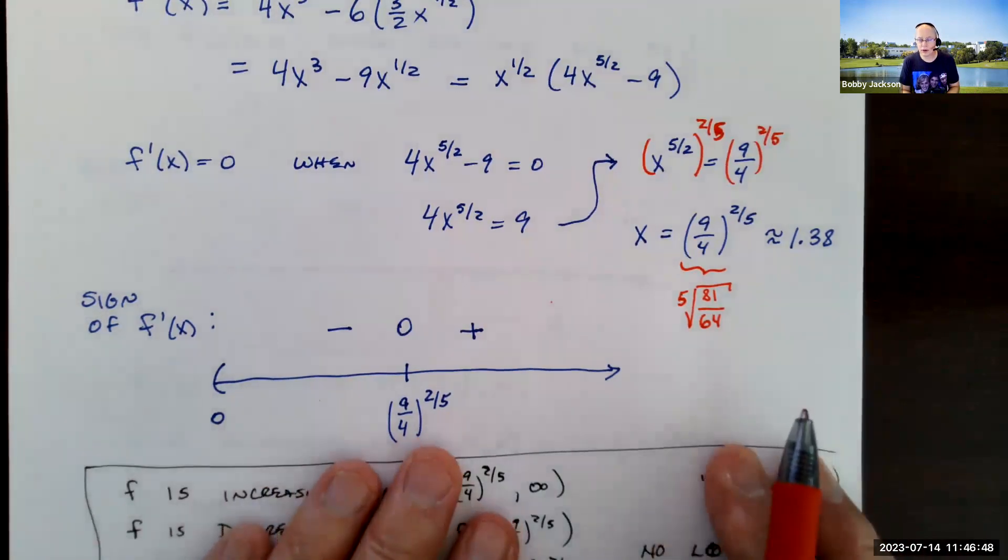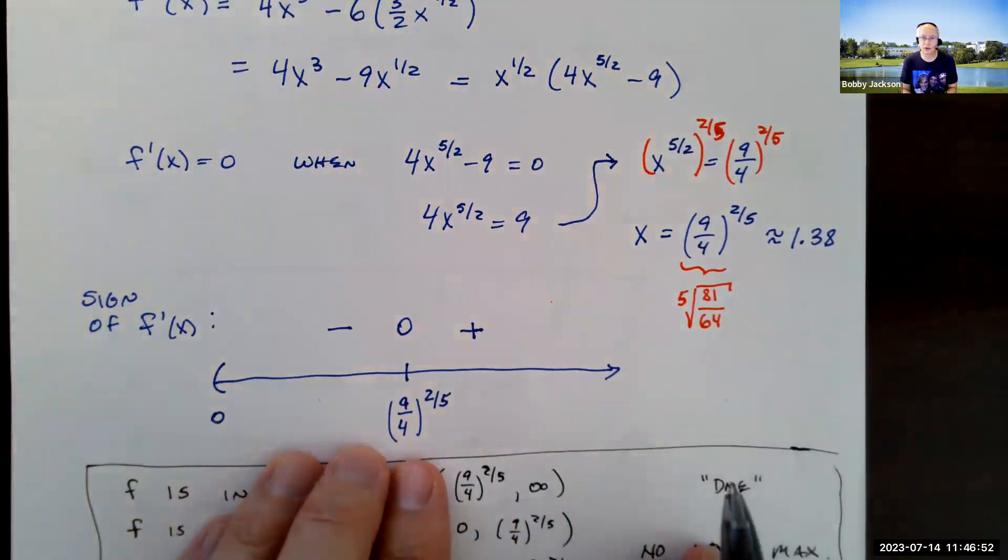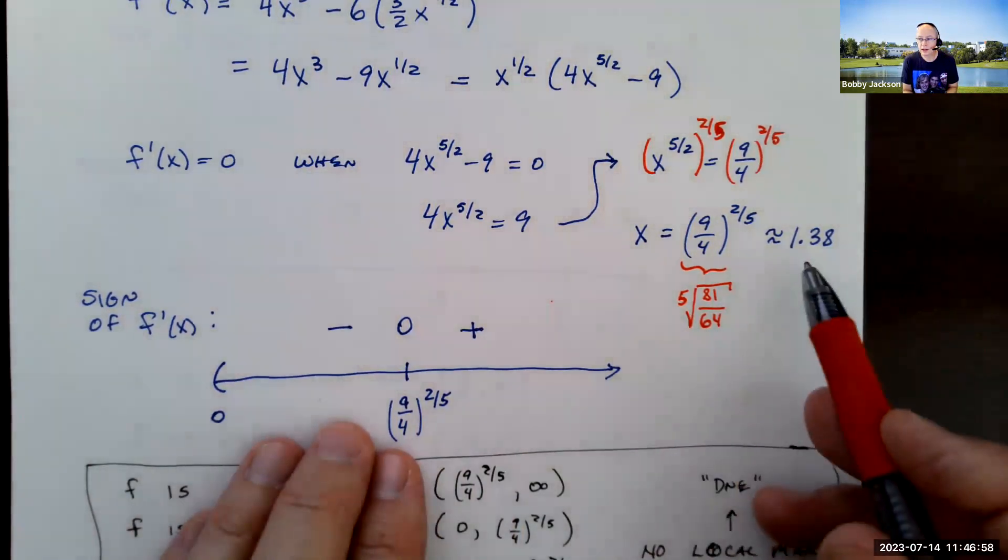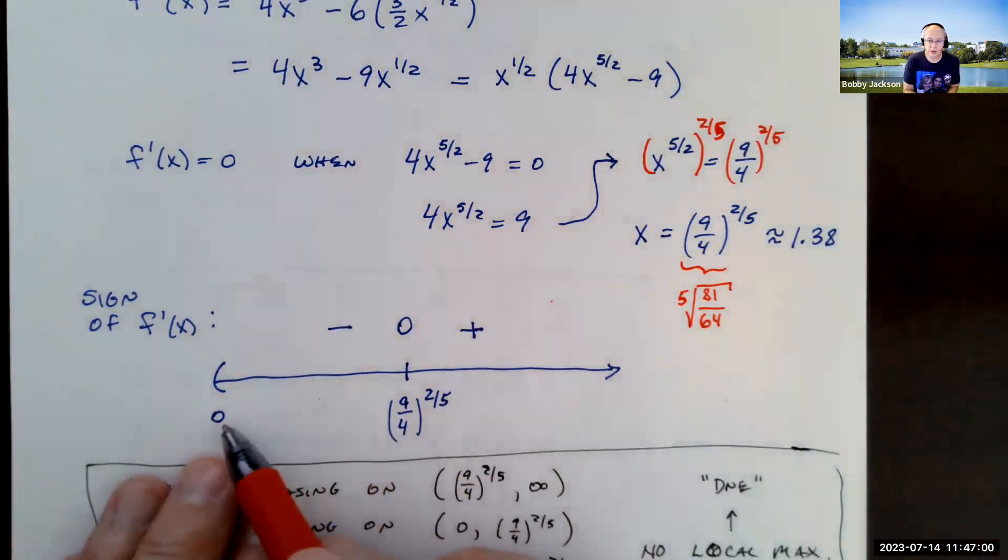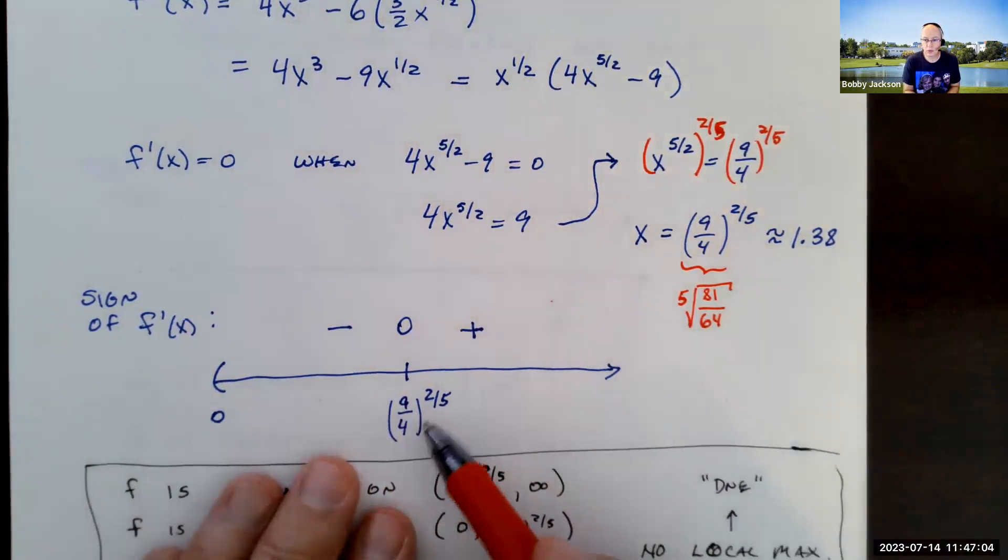Okay, what do you want to do now? You want to do a sign check, right? So to find intervals where we're increasing or decreasing, we need a sign check. And for the first derivative test, we need a sign check. So, again, don't forget, we're starting for values only greater than zero. Here's that critical point, which is about 1.38.